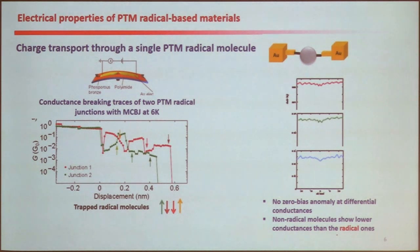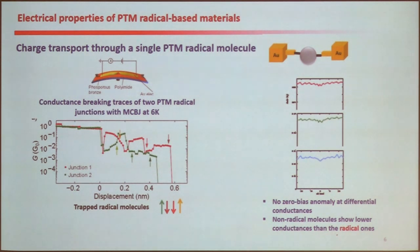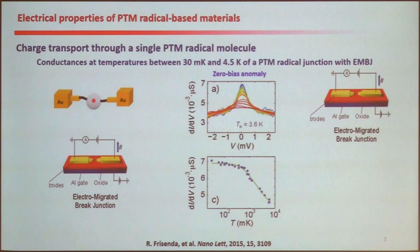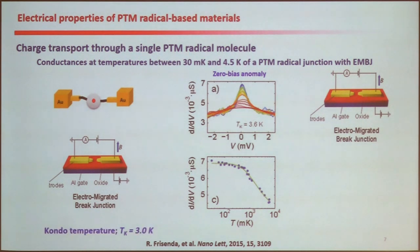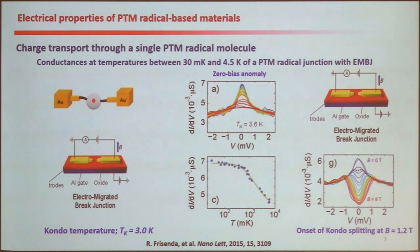If we did exactly the same experiments with the non-radical molecule, we obtain these three traces, in which you can see different differential conductance values, but there is no zero bias anomaly. That means the radical character produces this zero bias anomaly. To ascribe its nature, our colleagues performed experiments in electromigrated break junctions, changing the temperature and magnetic field, and ascribed this zero bias anomaly to a Kondo resonance — due to the interaction of this unpaired electron with the current through the leads. The Kondo temperature of these radicals is 3 K, and the onset of conductance splitting is around 1.2 Tesla.